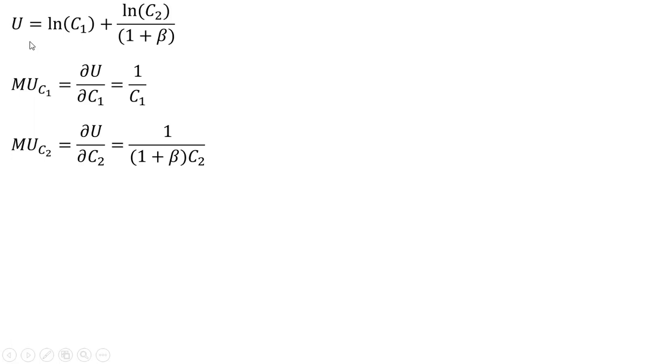So here's our utility function once again. We are going to get the marginal utility for consumption in period 1 and consumption in period 2, given by these respective partial derivatives. So the partial derivative of the utility function with respect to consumption in period 1 is just 1 over C subscript 1. And likewise, the marginal utility of consumption in period 2 is given by this result.